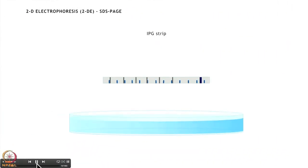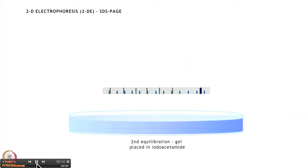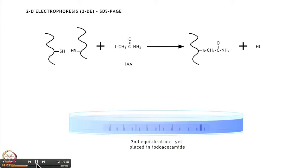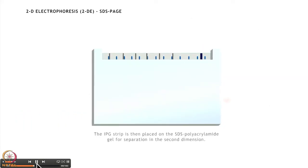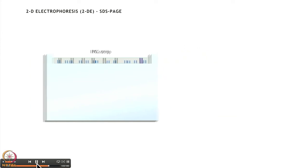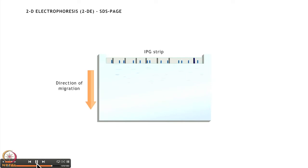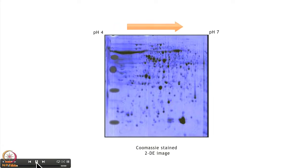The IPG strip is equilibrated in a reducing agent like DTT followed by an alkylating agent, iodoacetamide, which prevents reformation of the reduced bonds. This strip containing the separated proteins is then placed on the SDS polyacrylamide gel slab and subjected to SDS-PAGE by applying a direct current between 100 to 350 volts depending upon the size of the gel. Any proteins that may have been present as a single band on the IPG strip due to similar isoelectric points can now be separated on the basis of molecular weight, with smaller proteins migrating furthest. A sample 2DE gel stained with Coomassie blue shows each spot providing information about molecular weight and isoelectric point.